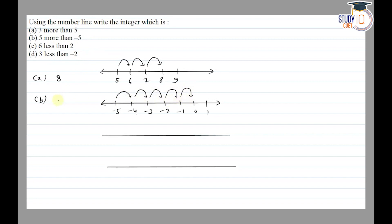Part c: 6 less than 2. So less than means we move left direction. We move accordingly: 1, 2, 3, 4, 5, and 6. 6 less than 2, so we have minus 4.